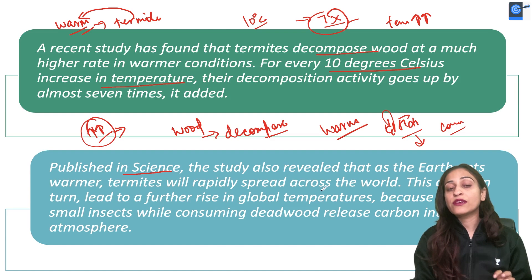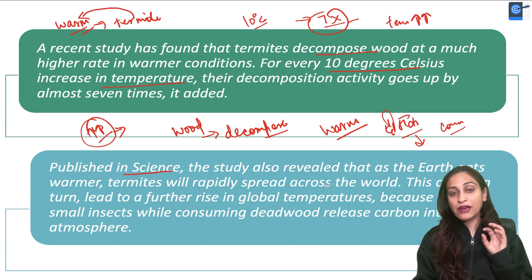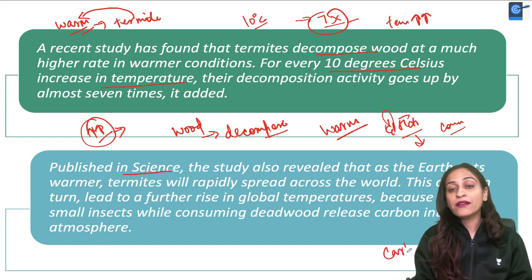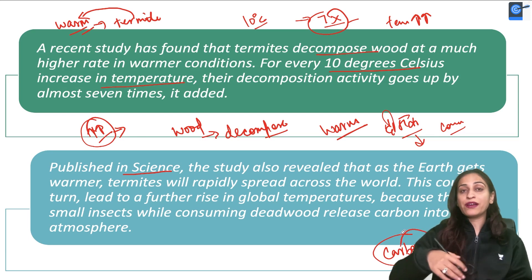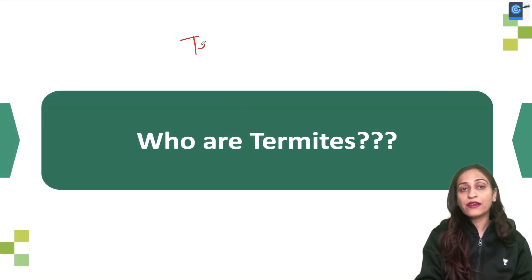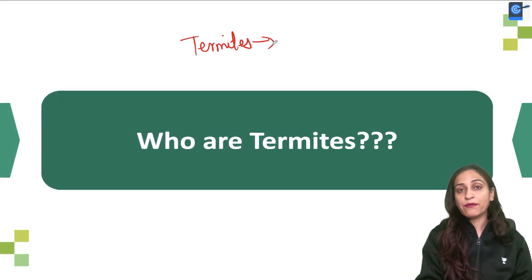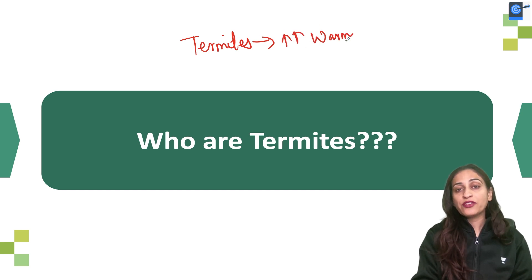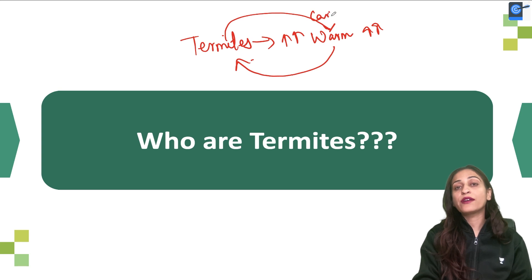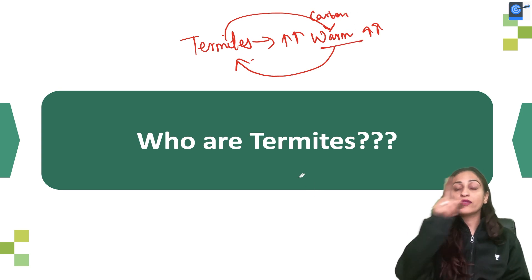Because when termites consume dead wood, they release carbon into the atmosphere. When they release carbon into the atmosphere, global warming increases. So the connection is: temperature is already increasing, in warm temperatures their decomposition activity increases, as decomposition activity increases the termites increase, and then termites release more carbon into the atmosphere, warming it further.